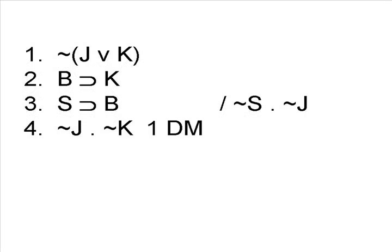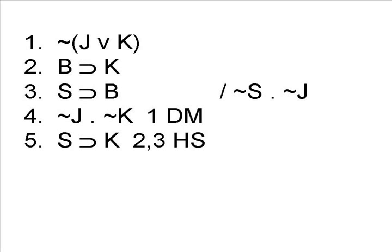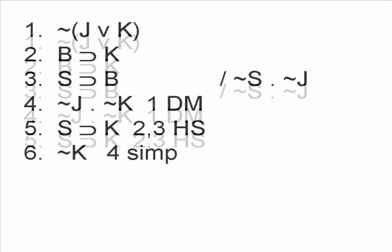Let's do DeMorgan's Rule first — we could have done the hypothetical syllogism first, it really doesn't matter. Turns out we're going to need both of them. Notice another advantage of doing DeMorgan's Rule on line 1 is that you take a disjunction and turn it into a conjunction. Now let's go ahead and do the hypothetical syllogism. The advantage of doing DeMorgan's Rule on line 1 is that you have a conjunction on line 4, which we can now simplify.